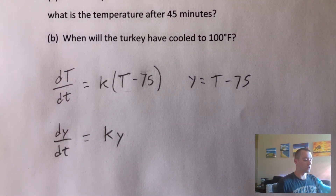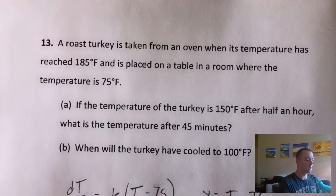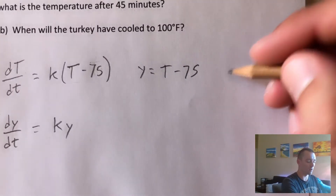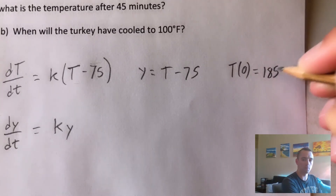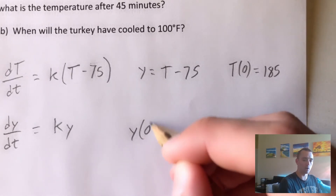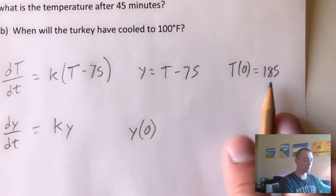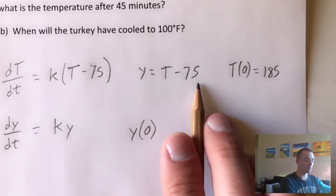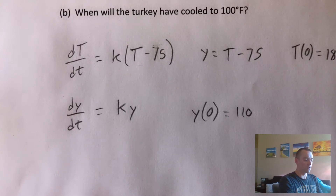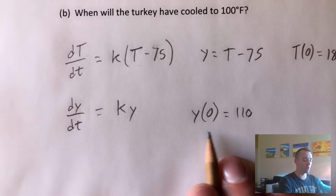This gives us a simpler differential equation, but we also need to keep in mind our initial condition. We do know how hot this turkey is right when it comes out of the oven — when T is zero, it's 185 degrees. So our function: the temperature of the turkey at time zero is 185 degrees. We also need to figure out what Y of zero is. When the temperature is 185, we use our equation: 185 minus 75 gives us 110. So now we have this new initial value problem — dY/dt equals K times Y, and when T is zero, Y is 110.